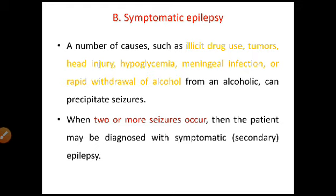The second type is symptomatic epilepsy. A number of causes such as illicit drug use, tumors, head injury, hyperglycemia, meningeal infection, or rapid withdrawal of alcohol from an alcoholic can precipitate seizures. In hypoglycemic conditions, blood cannot deliver sufficient glucose to neurons, causing neuronal damage. Meningeal infection can cause physical damage. Rapid withdrawal of alcohol may also cause alcohol withdrawal symptoms.